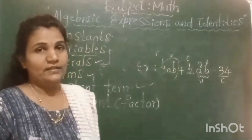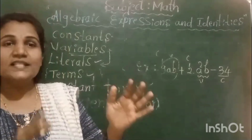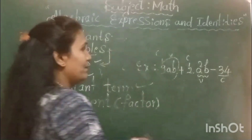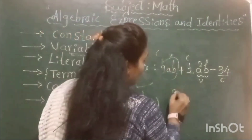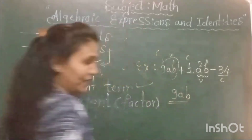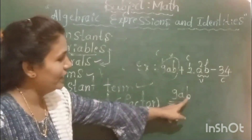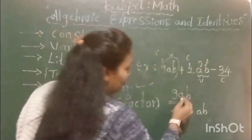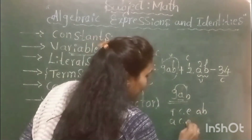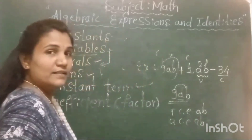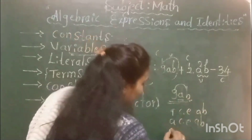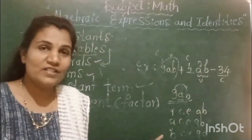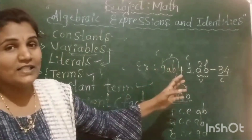Now we will go to coefficient or factor. Coefficient is nothing but each factor of a term in an algebraic expression. Let me take an example: 9ab. Here, 9 is the coefficient of ab, a is the coefficient of 9b, and b is the coefficient of 9a.